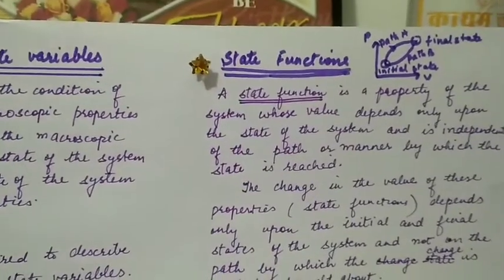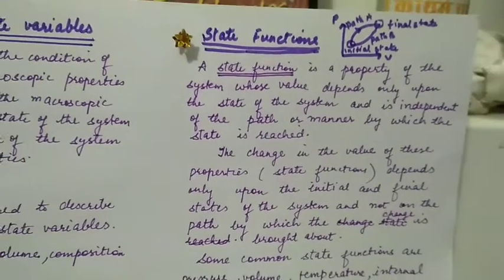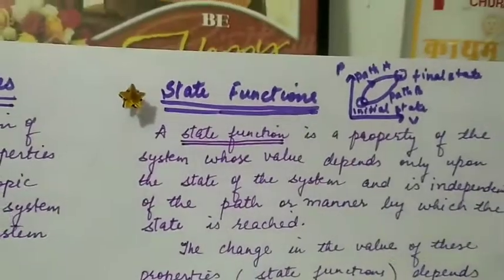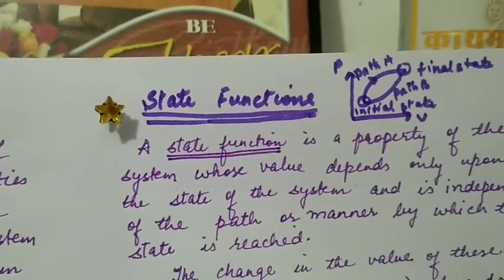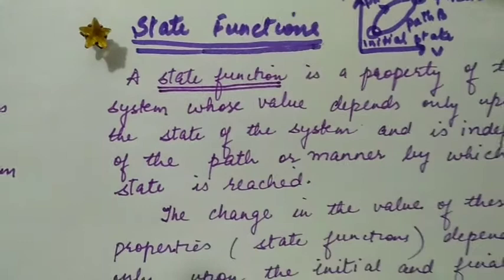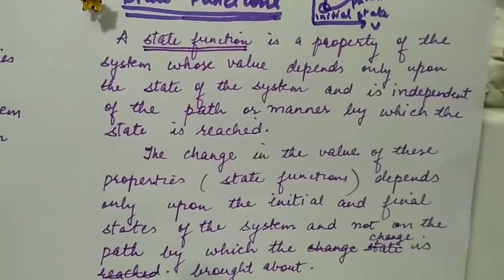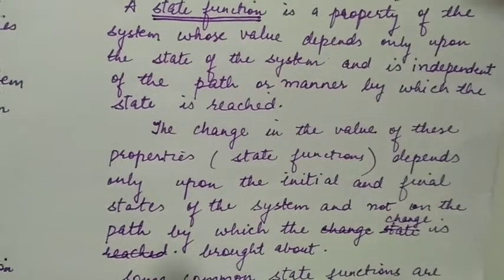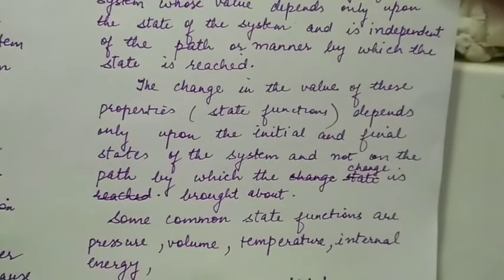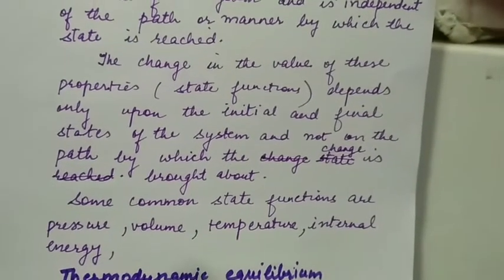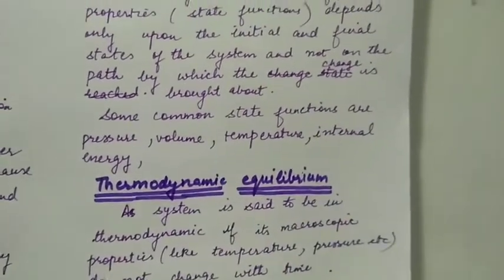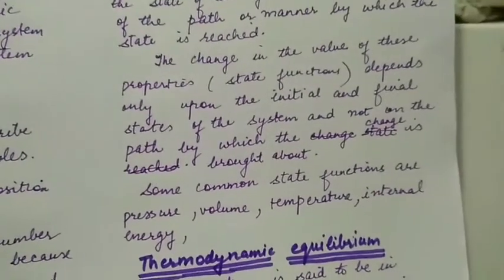State functions. A state function is a property of the system whose value depends only upon the state of the system and is independent of the path or manner by which that state is reached. For example, a component can go from initial to final state through path A or path B - the ultimate result is the final state F. So this function or this property which depends only on initial and final values and does not depend on path is called a state function. We have many properties which are state functions - their change depends only on final and initial state and does not depend on path, such as pressure, volume, temperature, internal energy - all these are state functions.